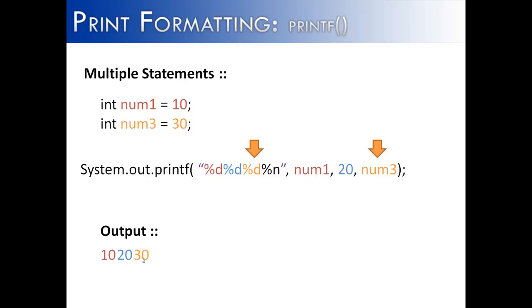So we have 10, 20, 30. And finally, this %n is just saying, I want to go to the next line. So if I had another print statement down here, it would not print on this same line.